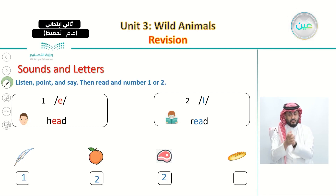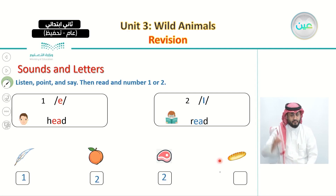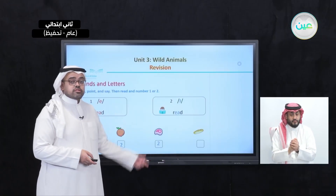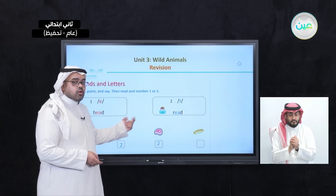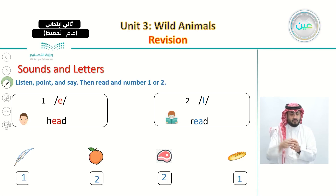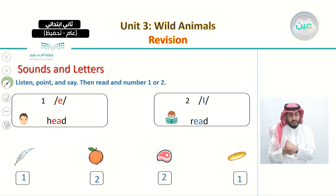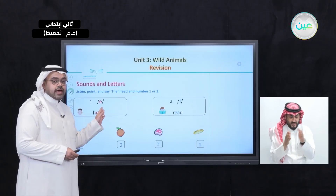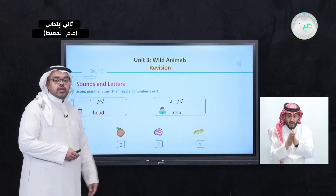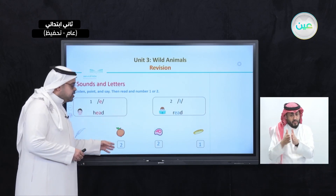Now let's listen to the last word: bread. Bread. Say it with me: bread. So what do you think? The word bread matches which sound — is it the first sound in head, or the second sound in read? It matches the first sound. So same letters but two different sounds: the first is short E as in head, bread, and feather; and the second is long E as in read, peach, and meat.